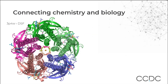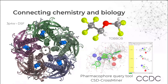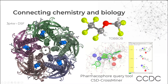Both the CSD and the PDB are valuable resources for protein ligand docking. Here we can see a protein stored in the PDB and if we look a bit deeper we can see the ligand highlighted in blue. This links to the small molecule structure of the ligand stored in the CSD under ref code TOBBOB. We can also mine these two databases simultaneously using our CSD Cross Miner tool, which performs pharmacophore queries across both databases as you can see in the animation.